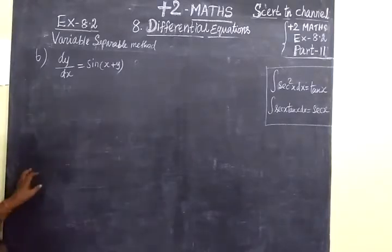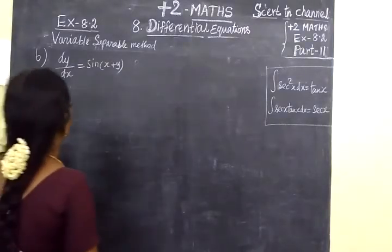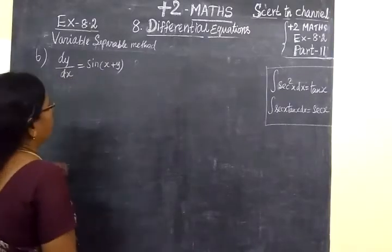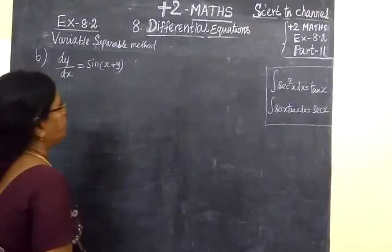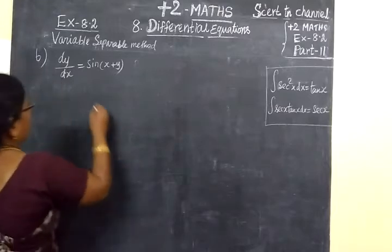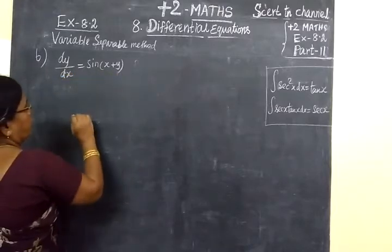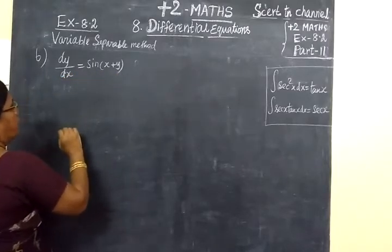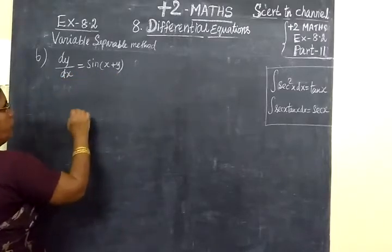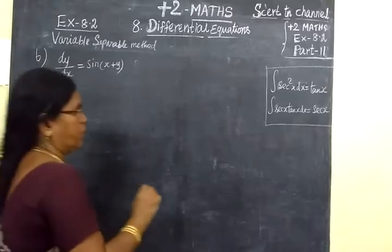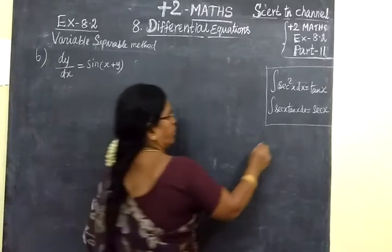Now we see part 11. This is the variable separable method. The equation is dy by dx equal to sin of x plus y.